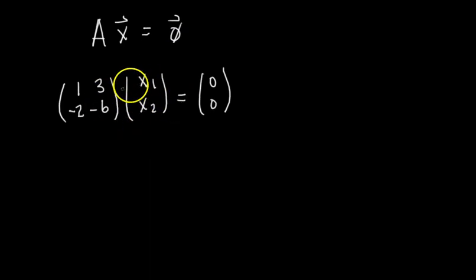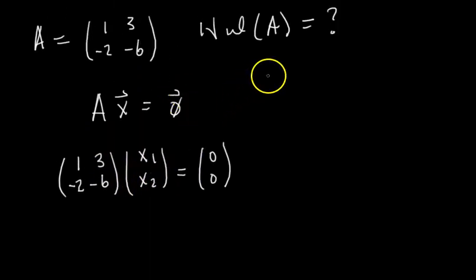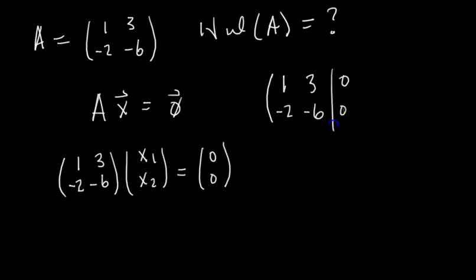Okay, so how do we do this? What's another way to write this system of equations? You could do it as an augmented matrix, so we could say 1, 3, 0, negative 2, negative 6, 0. Okay, so this is different representations of the same system of equations,